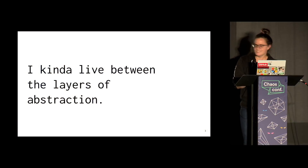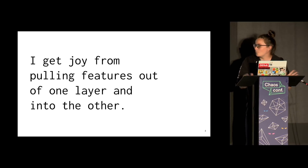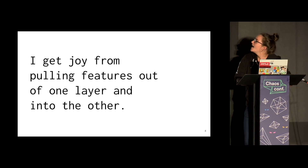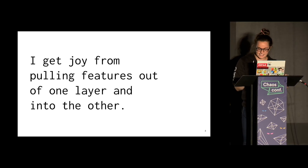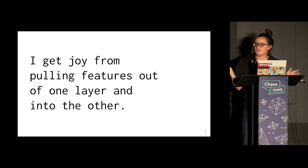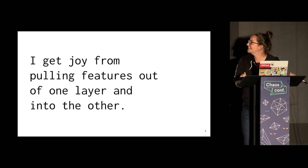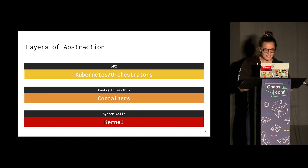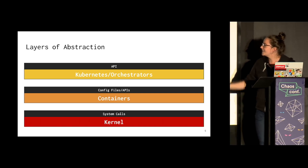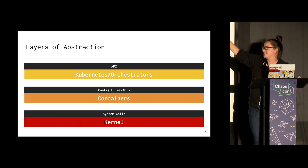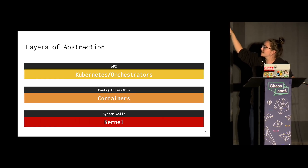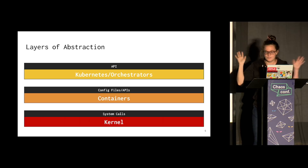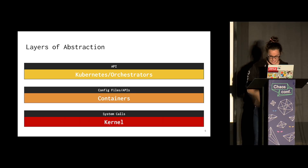I kind of just like to live between the layers of abstraction. This is actually where chaos usually occurs — between the layers of abstraction — because you have one thing talking to another thing. I also enjoy pulling features from one layer out into the other. You have the kernel, then containers on top using the system calls exposed by the kernel, then containers expose APIs and config files, then Kubernetes and orchestrators on top. Layers of software on top of each other until the end of time.